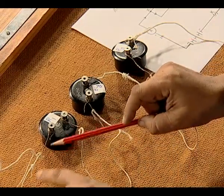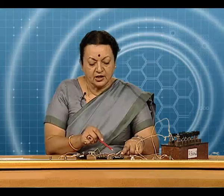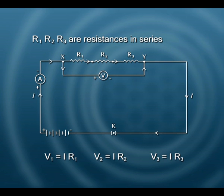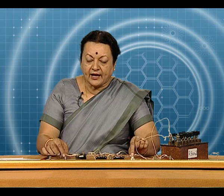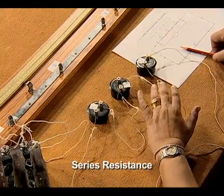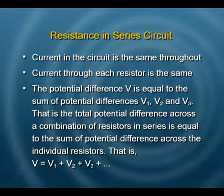The potential difference across each resistance may be different, which will have to be calculated in terms of the circuit current. The potential difference across R1 will be I — the current flowing in the circuit — multiplied by R1. The potential difference across R2 would be I multiplied by R2, and likewise for R3. They should all add up to the total potential difference across the three combined. This covers the details of series resistance.